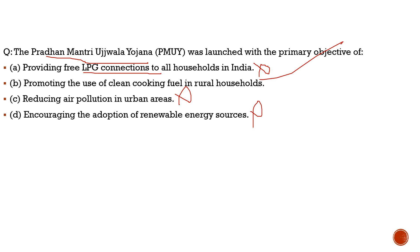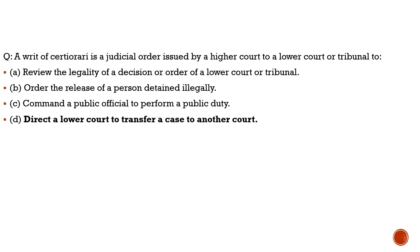Having solved all current affairs questions, we now shift to the static portion. Today's static topic is the writ of certiorari. The question asks what a writ of certiorari is. Option A states: a judicial order issued by a higher judiciary to a lower court or tribunal to review the legality of a decision or order of a lower court or tribunal.